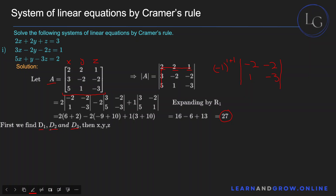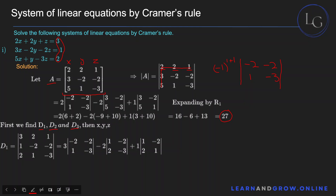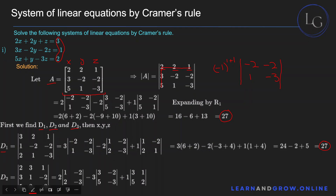Now you find the values of X, Y, and Z using D1, D2, and D3. The constants on the right-hand side haven't been placed in the matrix yet. For D1, you replace the X column with those constants — 3, 1, and 2 — and take its determinant the same way as before, giving you D1 equal to 27. For D2, you replace the Y column with the constants and get D2 equal to 0.